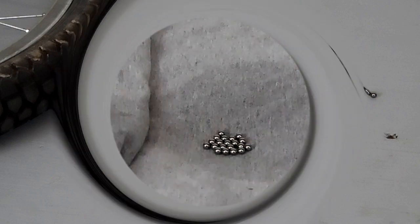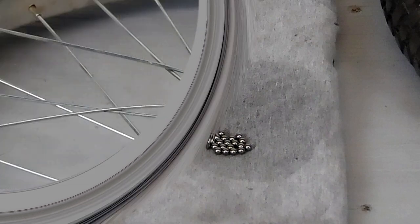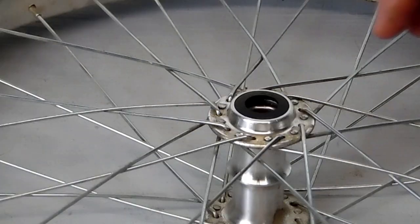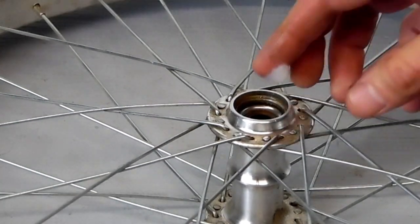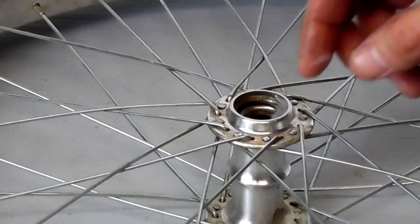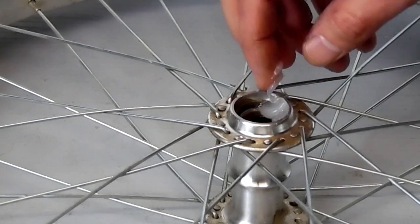Okay, once we got all the bearings out, we're gonna degrease them, clean them all up, and then we're gonna clean up the hub and check the race for any pitting or a lot of wear. Make sure that it's still in good shape, make sure all the bearings are still round.